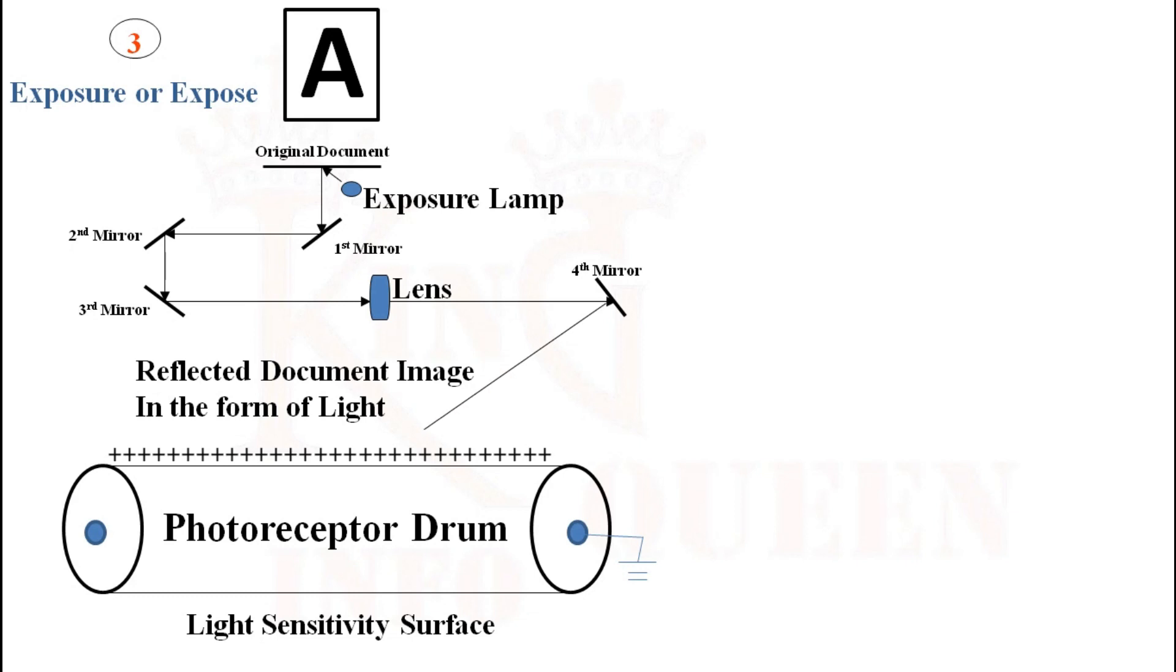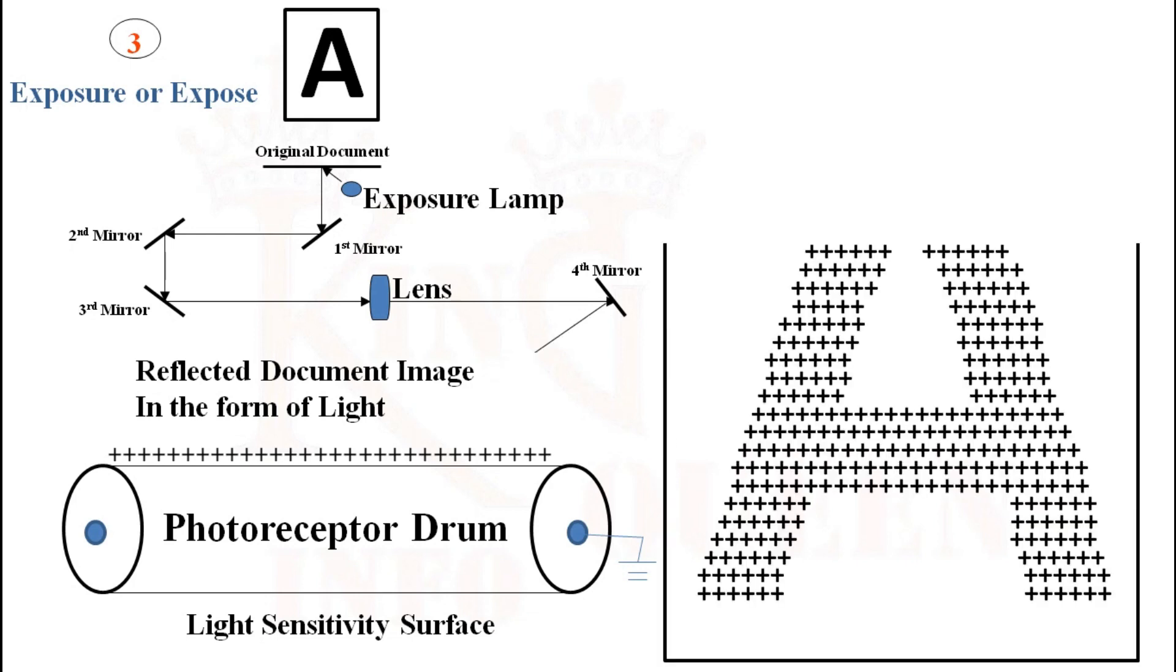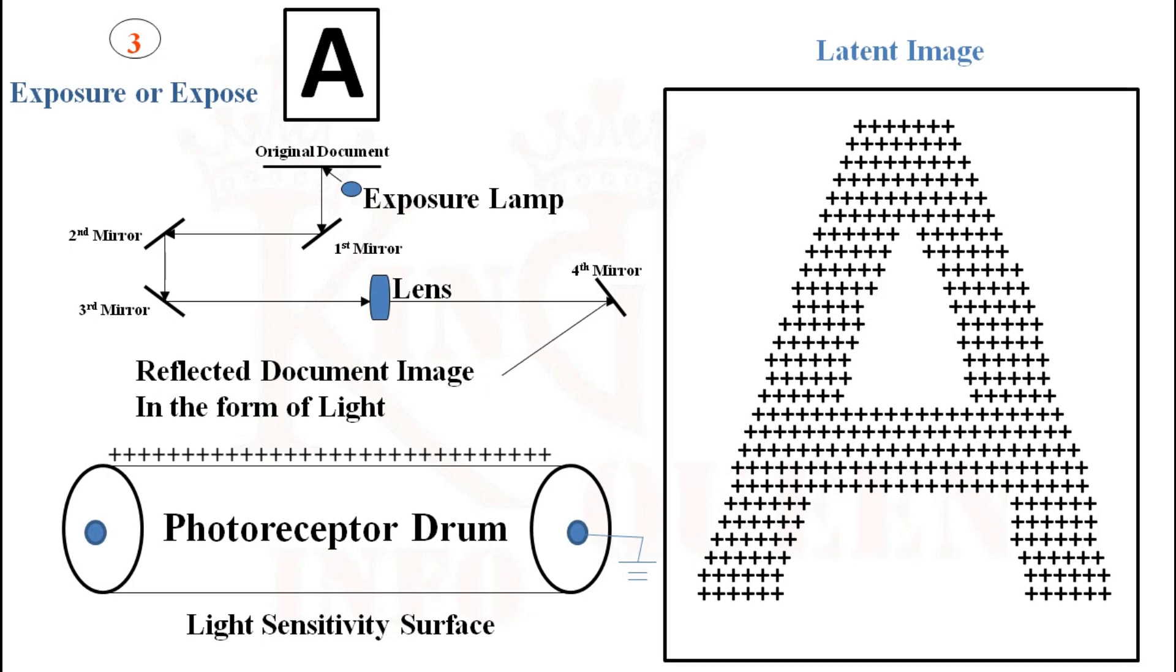Where light does not fall, the image area on the document, the charge remains as it is. This charged image on the photoreceptor which is invisible is known as latent image.